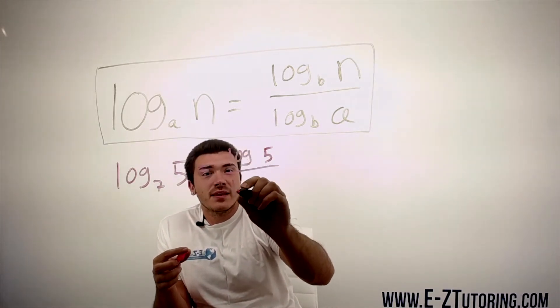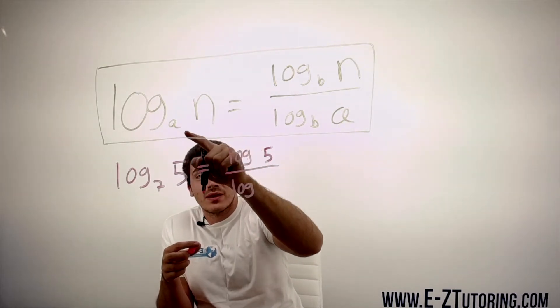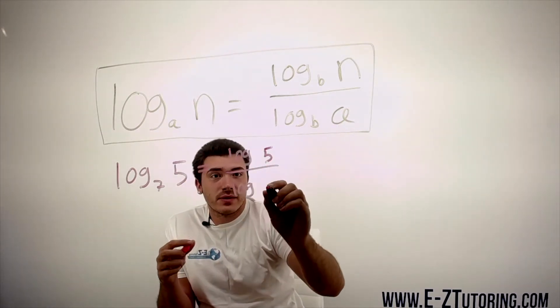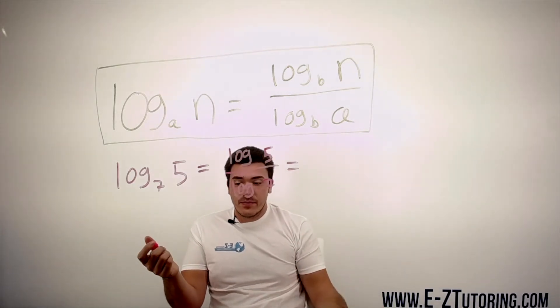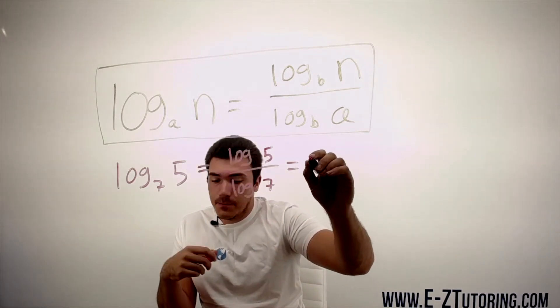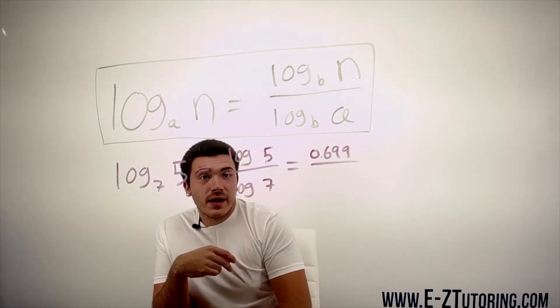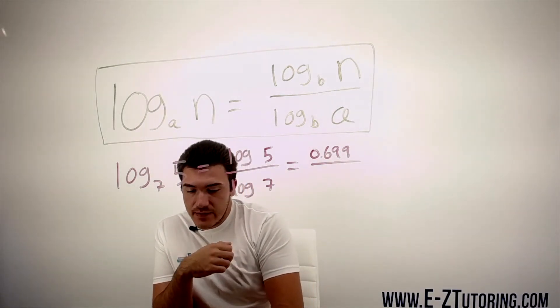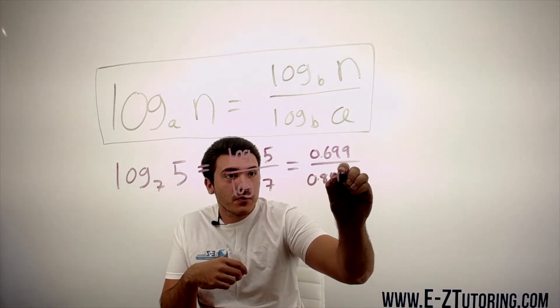We divide this by log of a, which is this number right here, 7. So now all we do is log 5 over log 7. We find out what log 5 is and it's about 0.699, and then we find out what log 7 is—it's about 0.845.